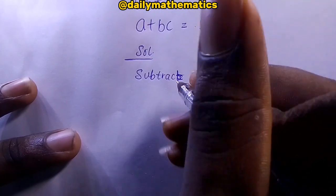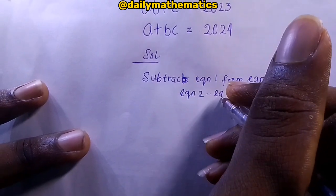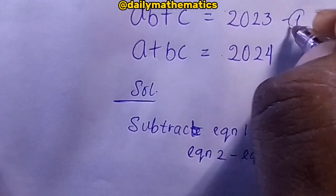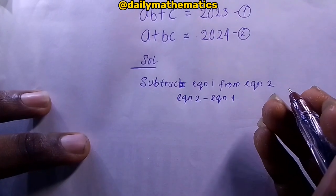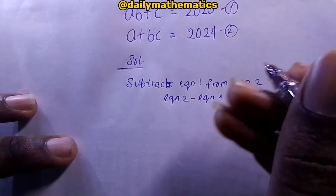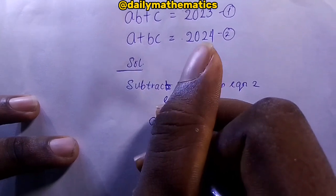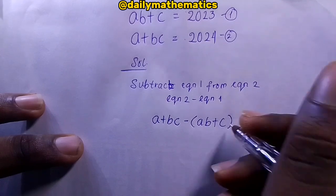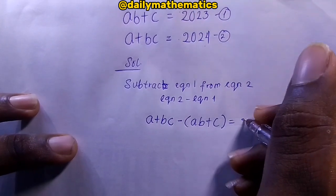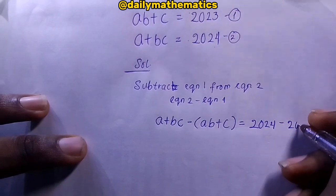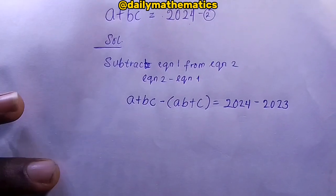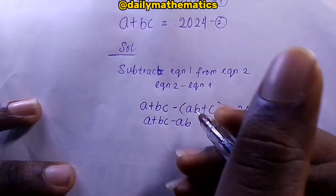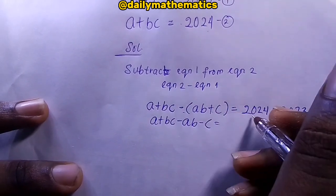Subtracting equation one from equation two means equation two minus equation one. So we have: (a plus bc) minus (ab plus c) equals 2024 minus 2023. Expanding: a plus bc minus ab minus c equals 1.